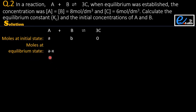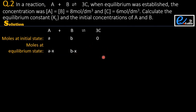The remaining moles of reactant A at equilibrium is A minus x. The same applies for B, which is B minus x. When equilibrium has been established, the moles of product C that have been produced is 3x.